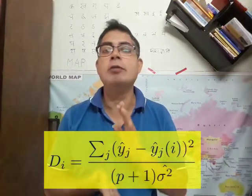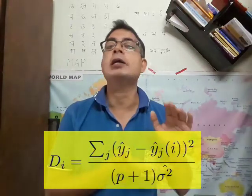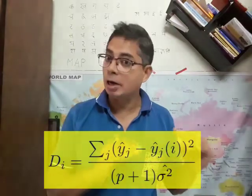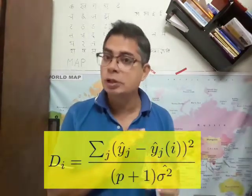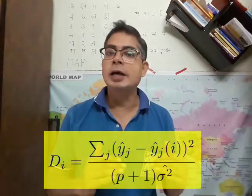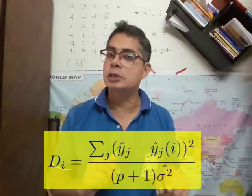So you take ŷ, the entire ŷ based on the entire data, and also the entire ŷ without using the ith case. But you are still predicting everything including the ith case. Take the L2 norm, that is the numerator, and standardize it by dividing by (p + 1)σ̂².